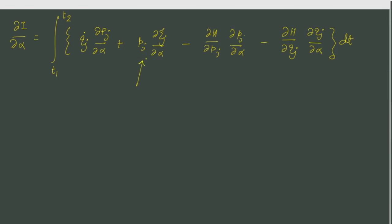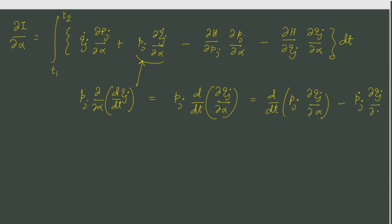The term together overall we have Pj and del del alpha of d dt of Qj. We know we showed it earlier that it is possible to rewrite this as the total time derivative of the product. And from there we subtract.